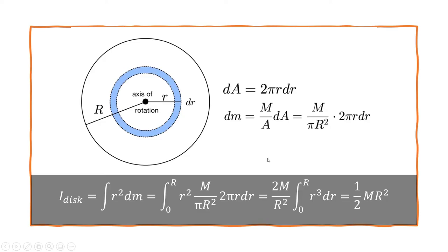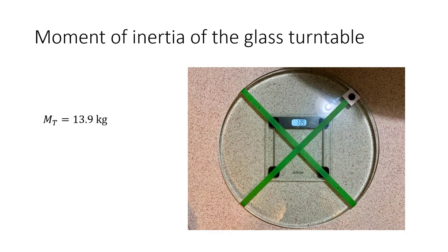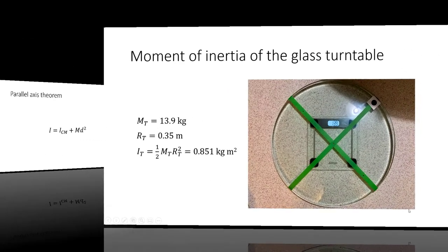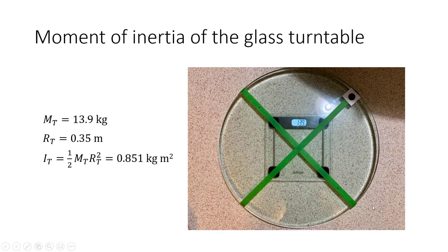And once again, the details of the calculations are here for a homogeneous disk. But the final result is just that the moment of inertia for a homogeneous disk rotating about its axis of symmetry is 1/2 mr squared. And for a glass turntable with a mass of 13.9 kilograms, a radius of 0.35 meters, that works out to 0.851 kilogram meter squared when rotating around its axis of symmetry.